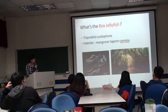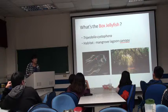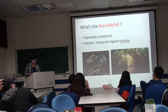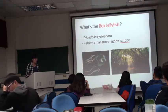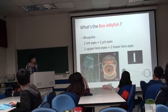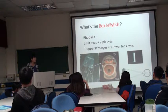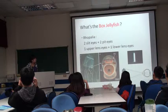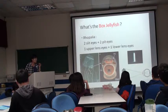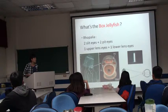First, what is the Box Jellyfish? There are so many kinds of Box Jellyfish, but here we talk about this kind: Tripedalia cystophora. Their preferred habitat is mangrove with good canopy. Canopy here is a shelter made by the mangroves. The Box Jellyfish has a structure called rhopalia, including two slit eyes, two pit eyes, one upper lens eye, and one lower lens eye. Pit eyes and slit eyes can only detect light or darkness, but upper and lower lens eyes can form images.